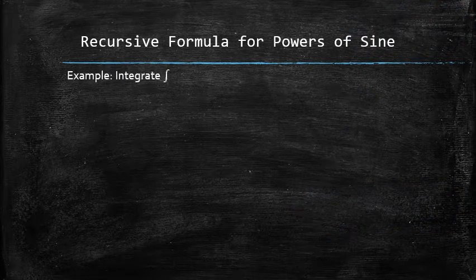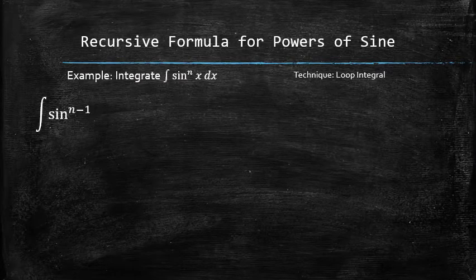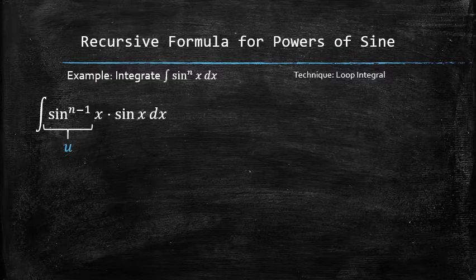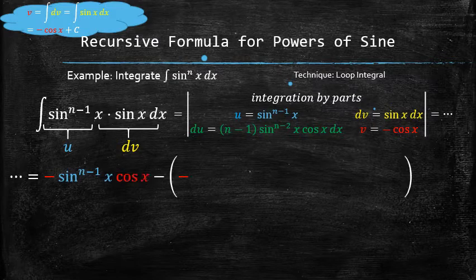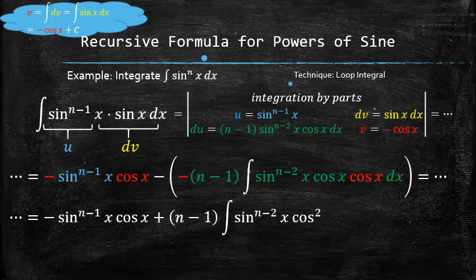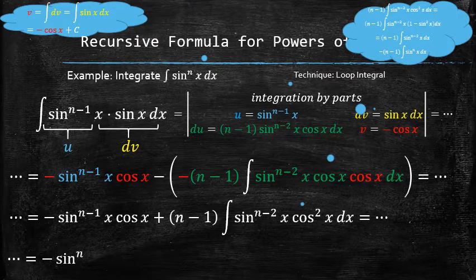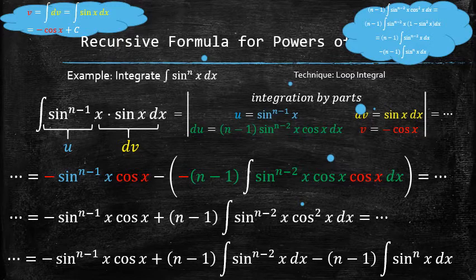Now, we can integrate the sine raised to any power n using the same technique that leads to a loop integral. We rewrite the integrand and choose u and dv, then integrate by parts by differentiating u to find du and integrating dv to find v. We apply the formula and combine the like terms to produce a new integral. To find the new integral, we use the Pythagorean identity to rewrite the square of cosine, then use linearity of the integrals to split the integral into one simple one and one that is the original integral, which creates a loop. We introduce i to replace the original integral everywhere it appears.